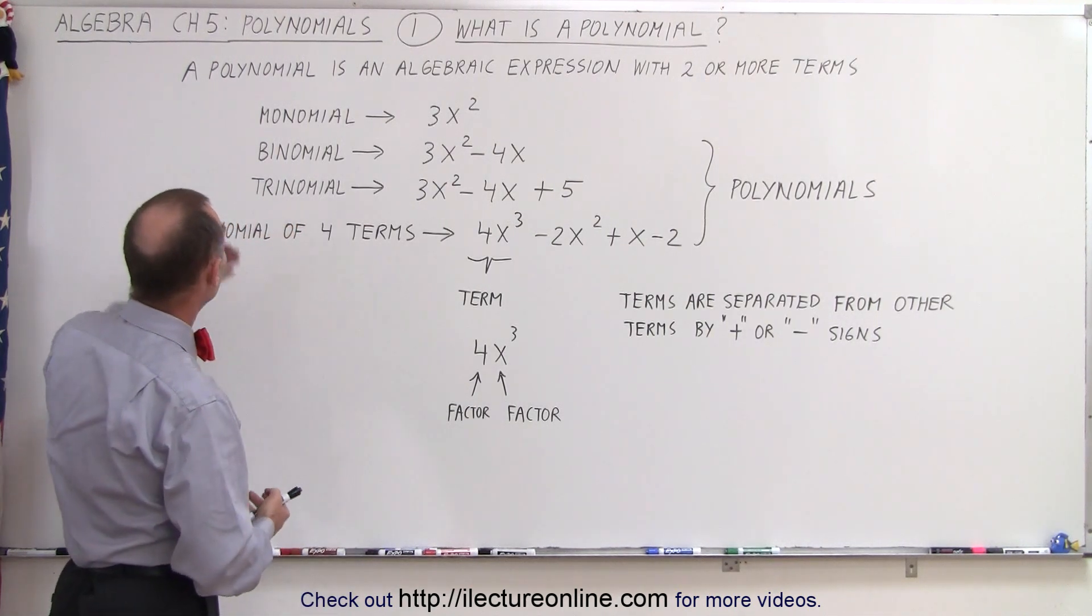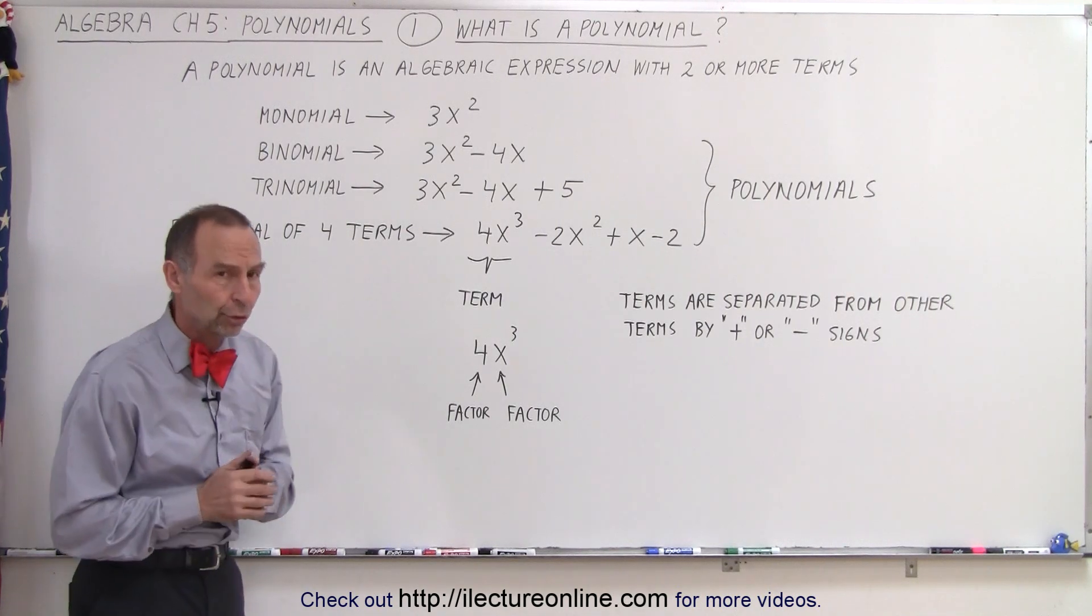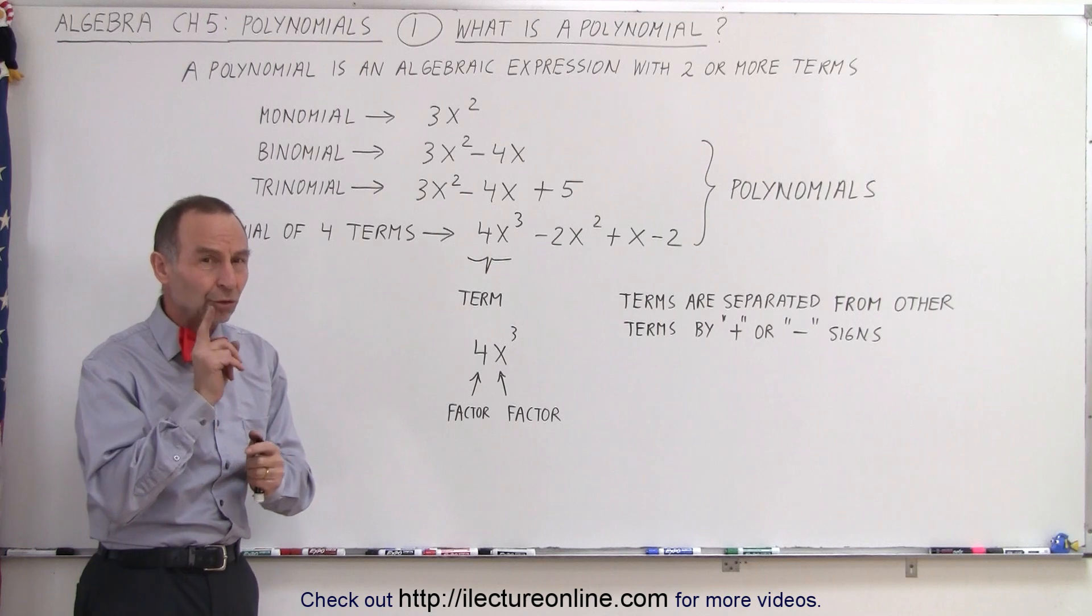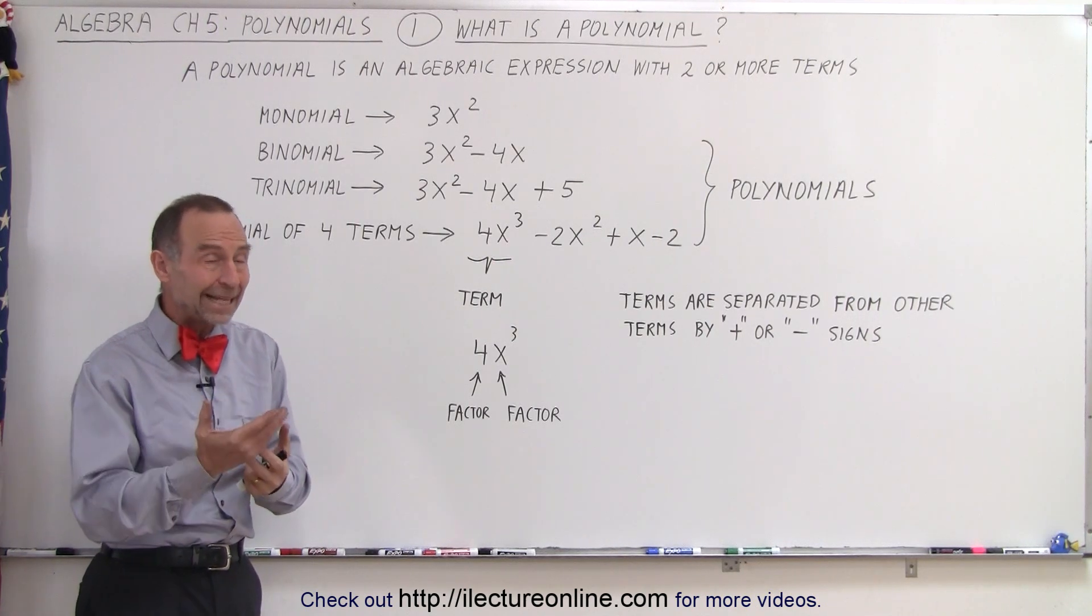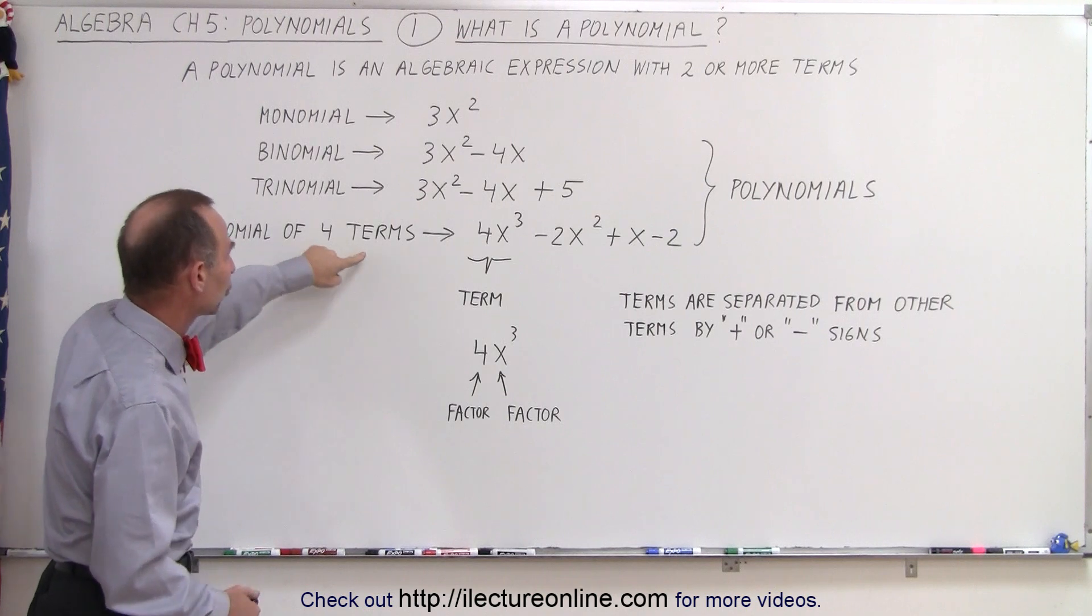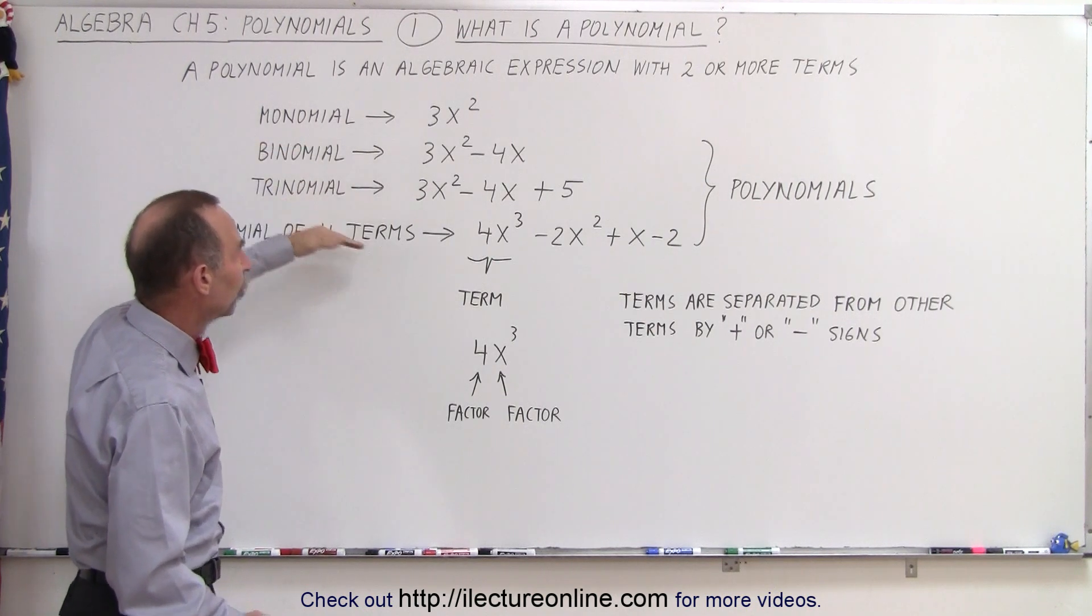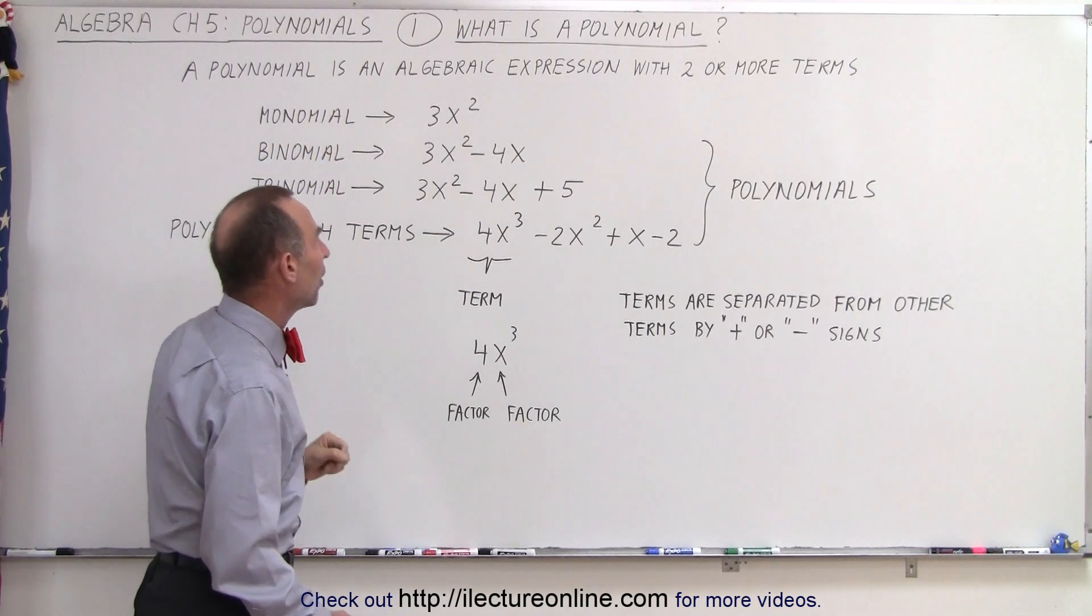By strict definition, it's an algebraic expression that has two or more terms. If it only has one term, it's called a monomial, but a polynomial, poly means many, means more than one. So we have a binomial, a trinomial, or what we call a polynomial of four terms. Those are all called polynomials. If it only has a single term, it's called a monomial.